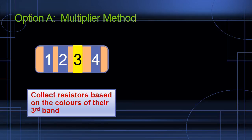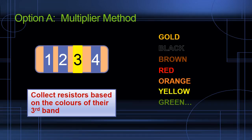If you choose the multiplier method, you might want to have bins for gold, black, brown, red, orange, yellow, and green.